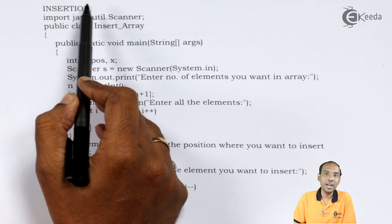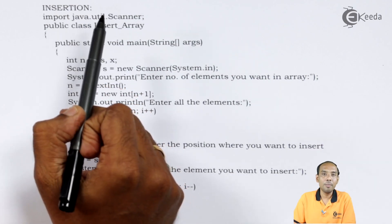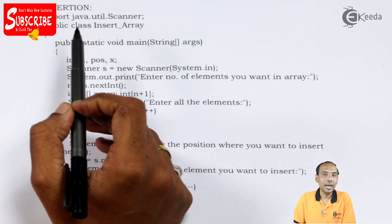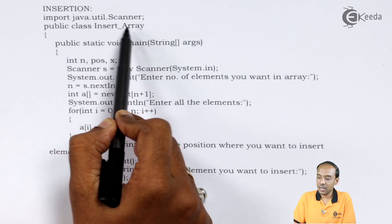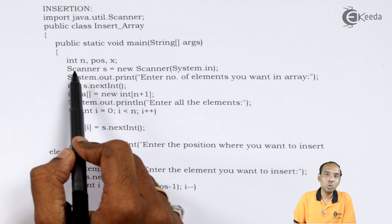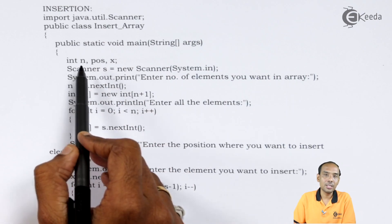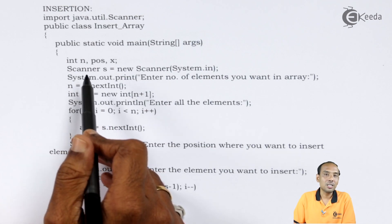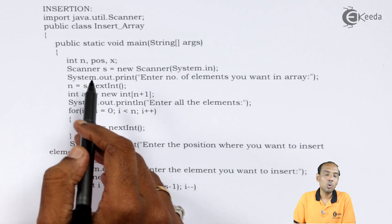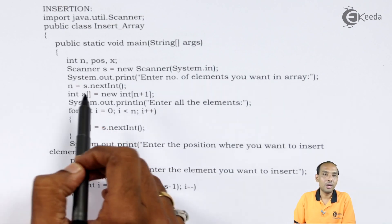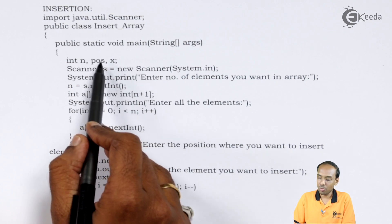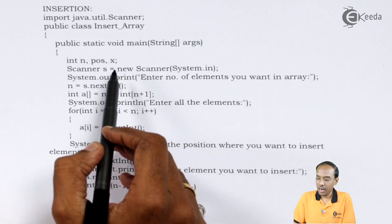Insertion is defined as adding a new element into the array. For this we need to define the class and its object. I have defined a class named as insertArray. In that I have used three integer variables: n, pos, and x. n defines the size of the array, pos defines the position at which we are going to insert the value, and x is used for entering the element value.